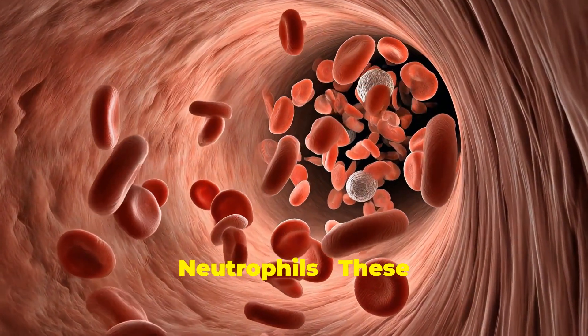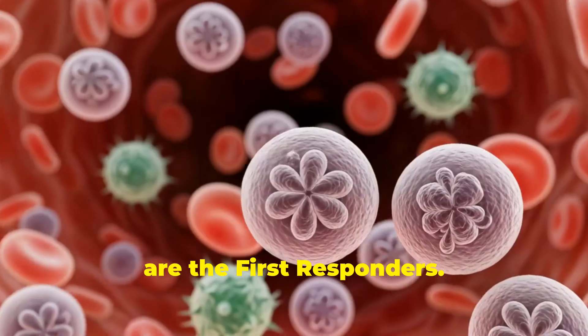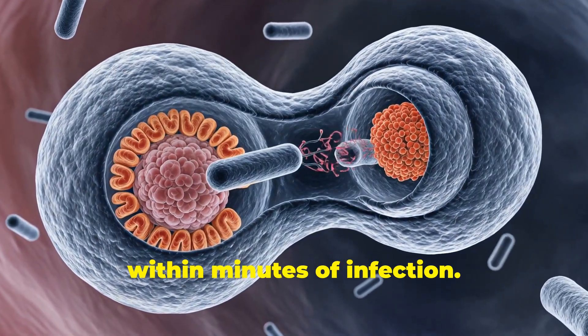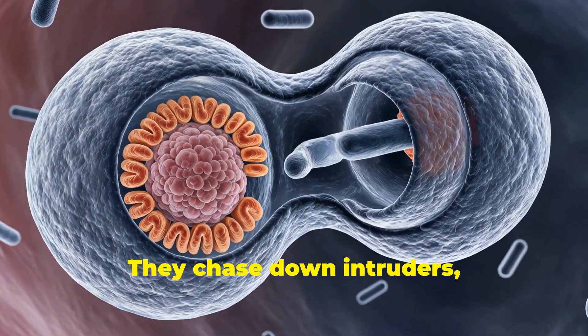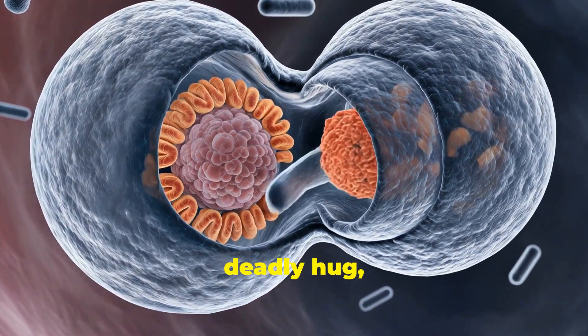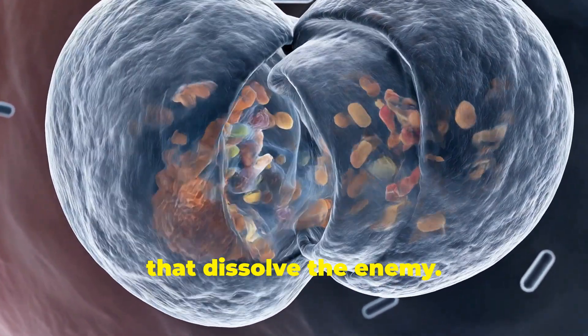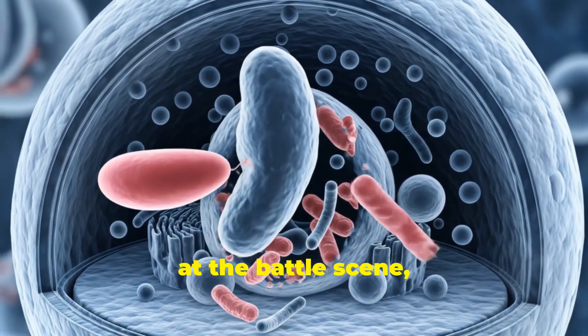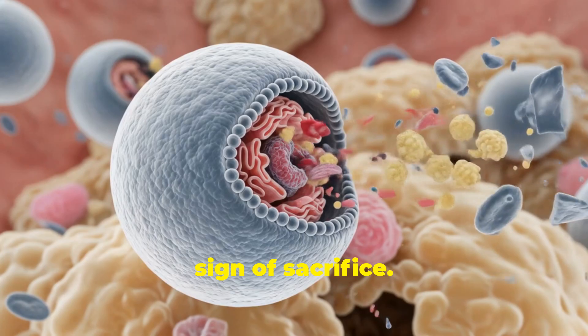Neutrophils. These are the first responders. They are fast, ruthless, disposable. Neutrophils arrive within minutes of infection. They chase down intruders, engulf them in a deadly hug, and release enzymes that dissolve the enemy. But their lives are short. They often die at the battle scene, forming pus as a sign of sacrifice.